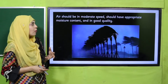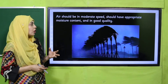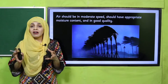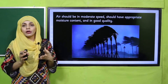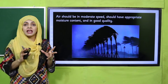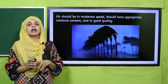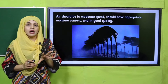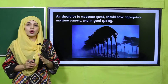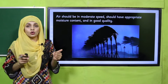Air should be moderate — its speed should be appropriate, moisture content should be suitable, and it should be in good quality. Weather should be moderate; it should not be very cold, very warm, very fast, or at very low temperature. When air is in moderate quantity and quality, then there will be a balance in an ecosystem.